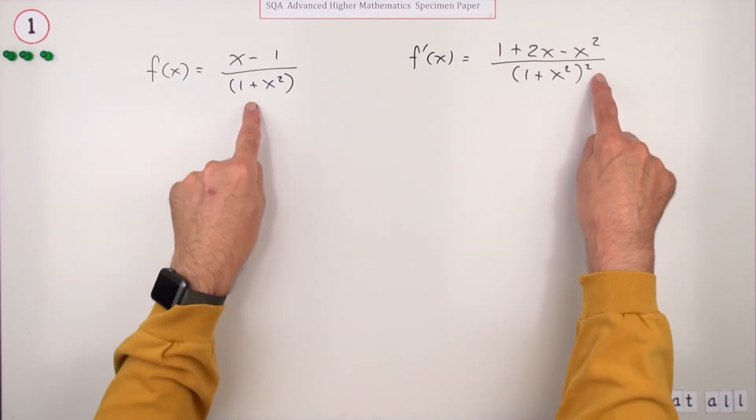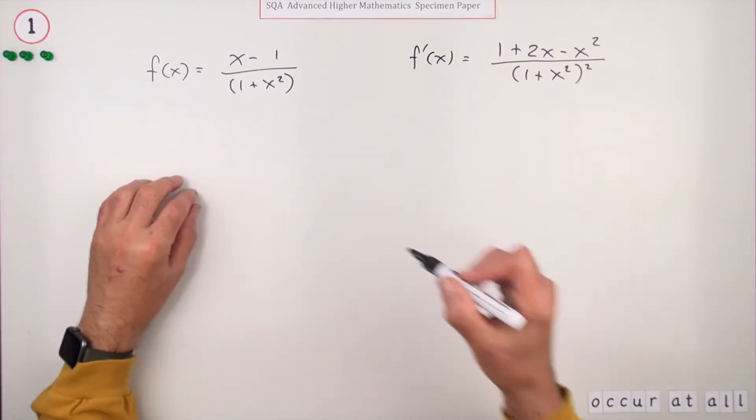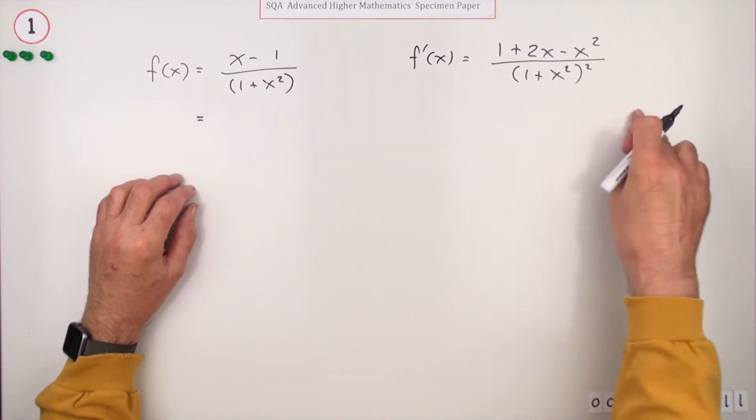And there's a wee reminder, look, you square the denominator. So there's three marks there, won't be a mark just for writing that down obviously.